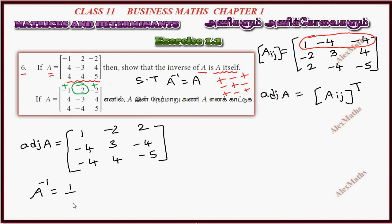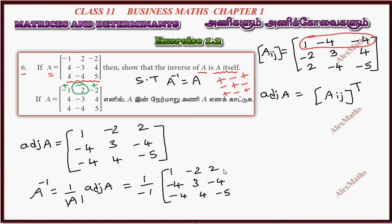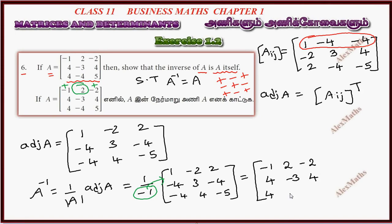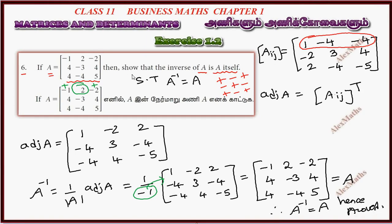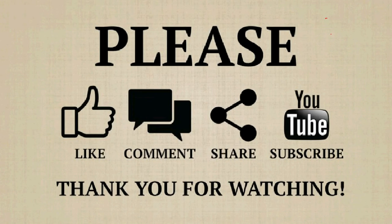A inverse formula: 1 divided by determinant of A, times adjoint of A. Determinant is minus 1. Adjoint elements: 1, 2, 2, 3, 4, 4, 5, 5, 1, 1, 1, 2, 2, 4, 4, 5, 5, 6, 7, 8, 9, 5, 5, 6, 6, 7, 7, 8, 8, 9, 9, 10 — giving us A inverse equal to A.